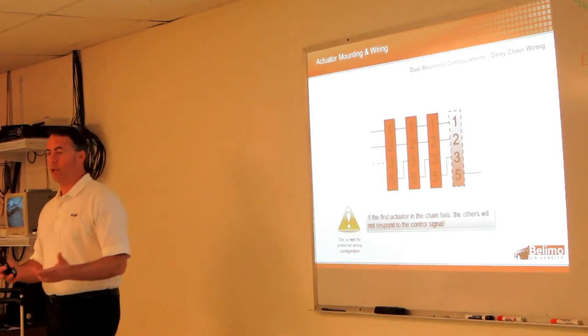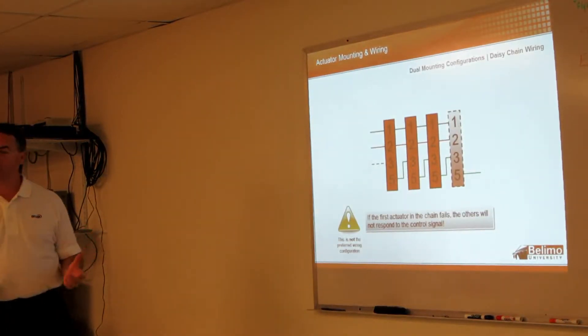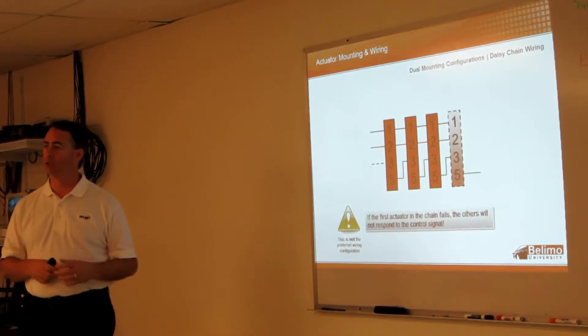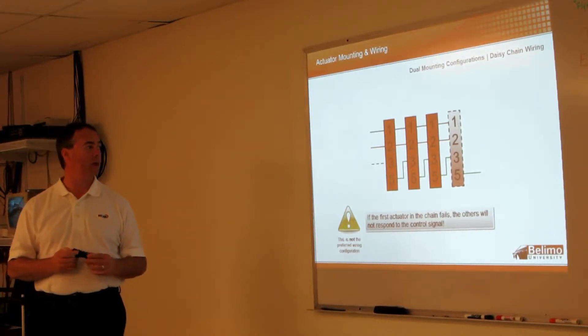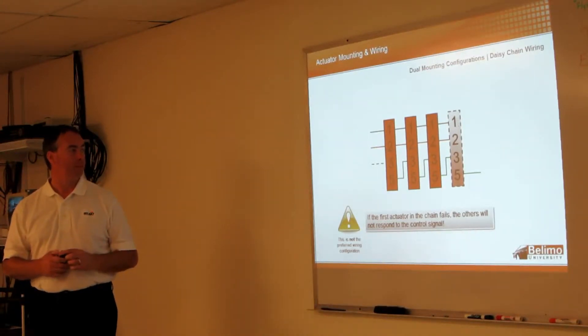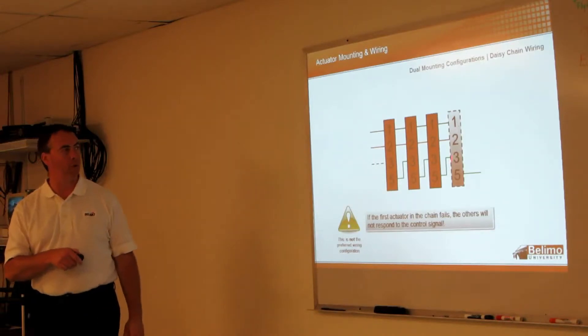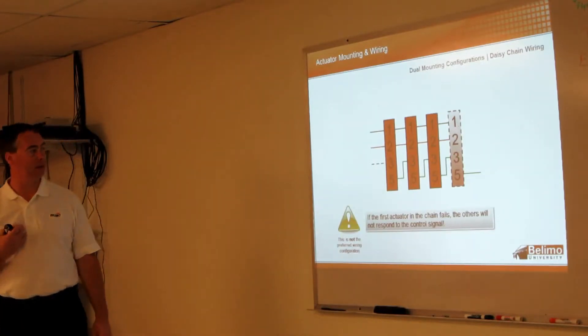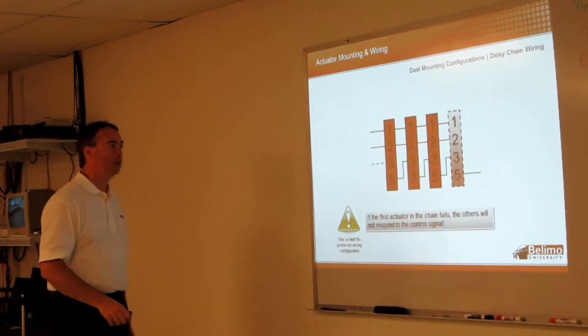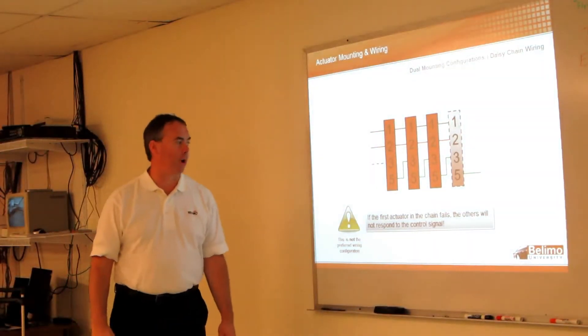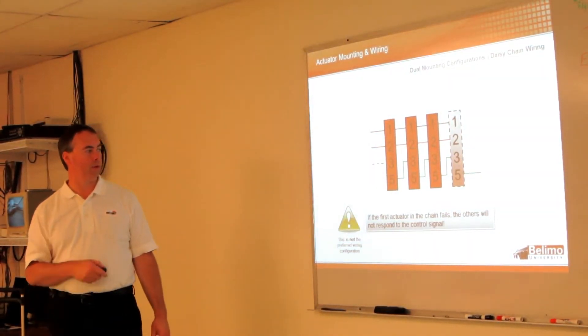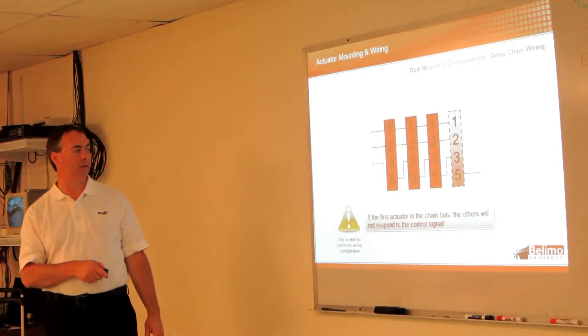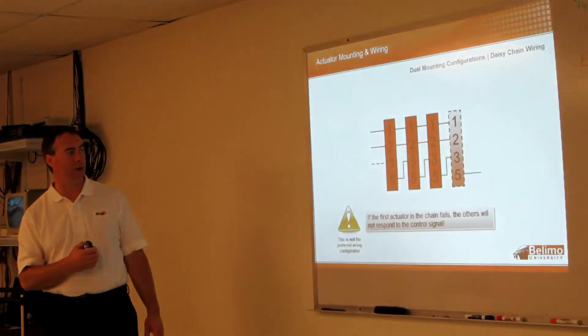As I was mentioning, the EF, our 270 inch pound, we can mount multiple actuators on one shaft. This is one way of wiring, it's not our preferred method. Some people will wire directly to the control signal. Some of the first actuator chain fails, others will not respond to the control signal.